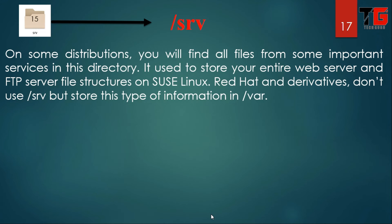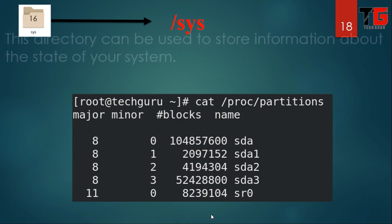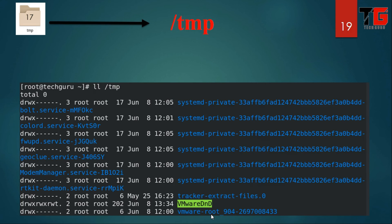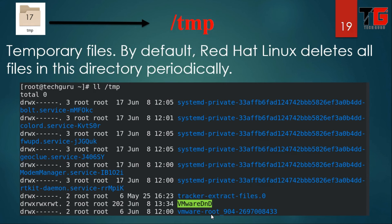Next is slash srv. When you are installing FTP and web servers, SUSE Linux will use the srv directory, but in Red Hat they use the slash var directory instead. Next is slash sys. This directory can be used to store information about the current state of your system. In this example, we check the partitions existing in my system — there is one hard disk named sda with three partitions, and one CD-ROM.